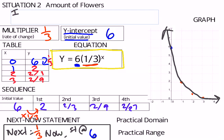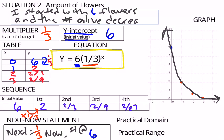Now if I write my situation in terms of my flowers, it would be that I started with 6 flower beds, and the number alive decreased by 1/3 every day. Let's say every day.